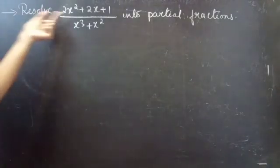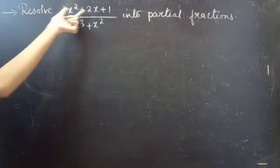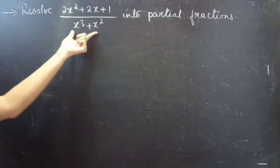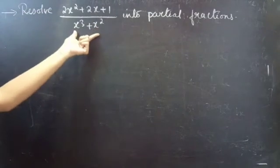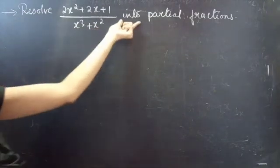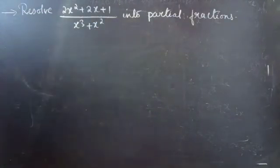Problem: resolve 2x squared plus 2x plus 1 by x cubed plus x squared into partial fractions.